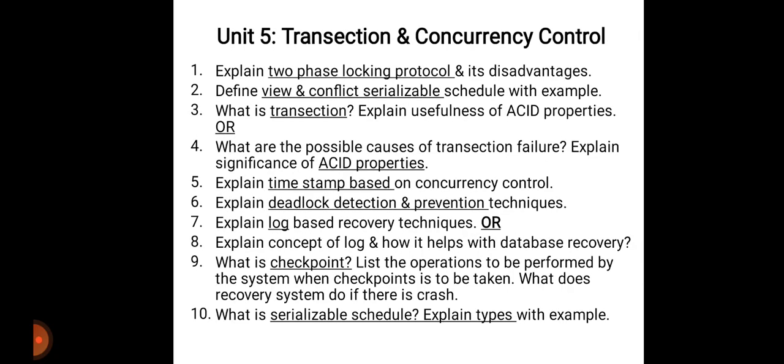Unit three and unit five are the most important units in DBMS. Unit five covers transaction and concurrency control. The first question is explain two-phase locking protocol and its advantages with example. The second is view and conflict serializable schedule with example. Question three or four will ask either about transactions and ACID properties — ACID properties is the most important question in the exam, so prepare it with examples. Next, explain timestamp-based concurrency control.